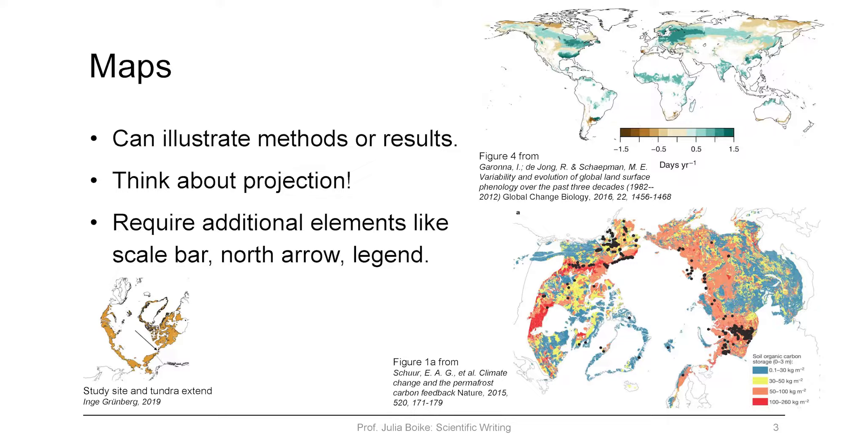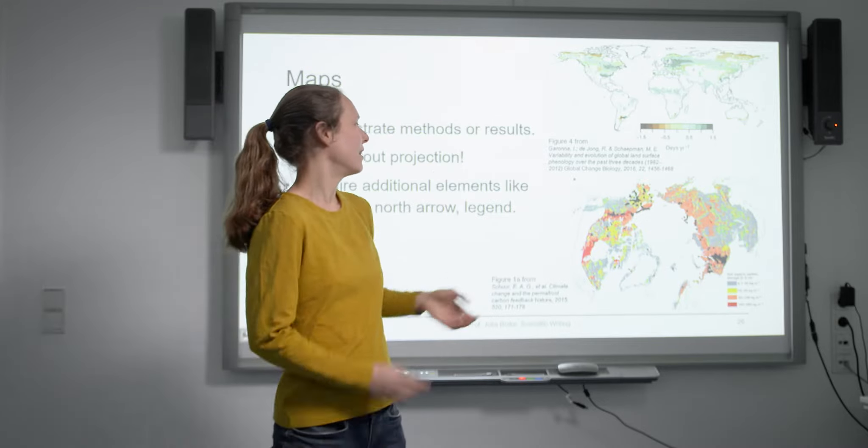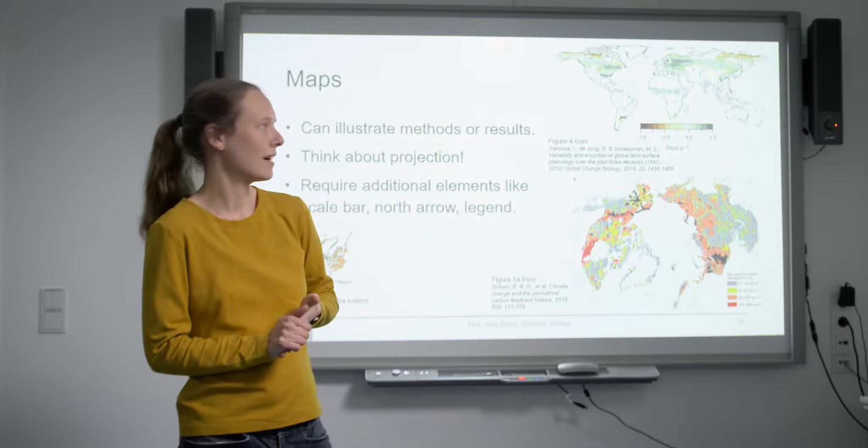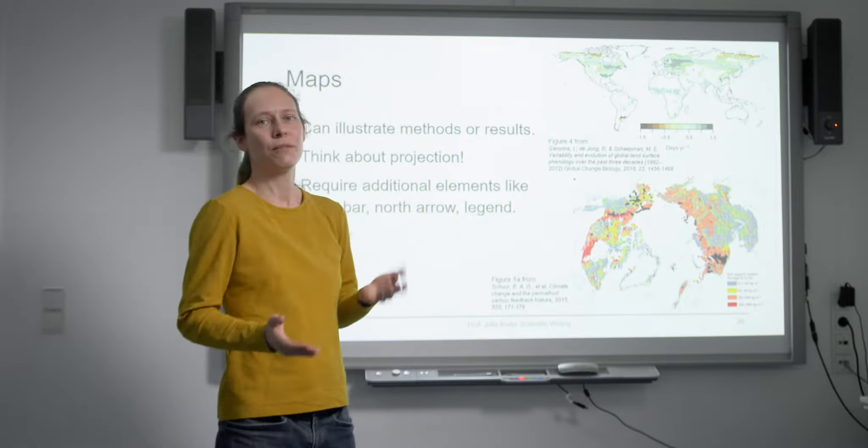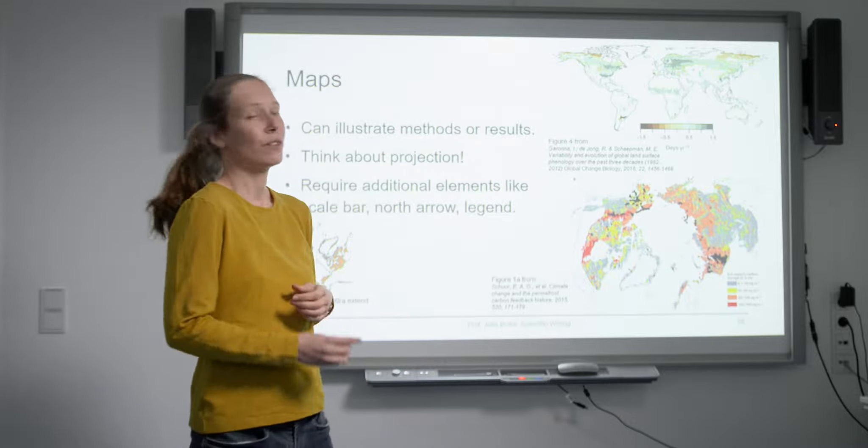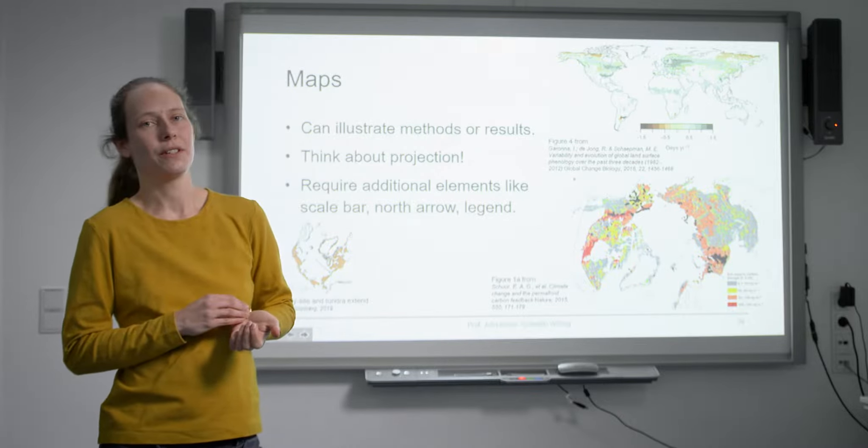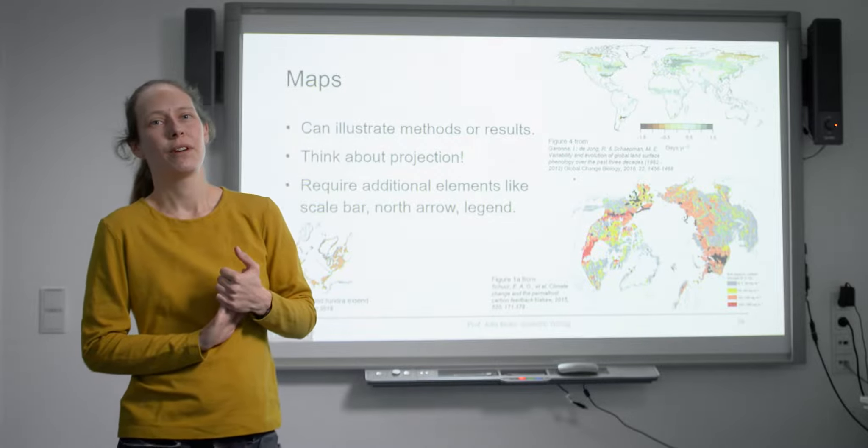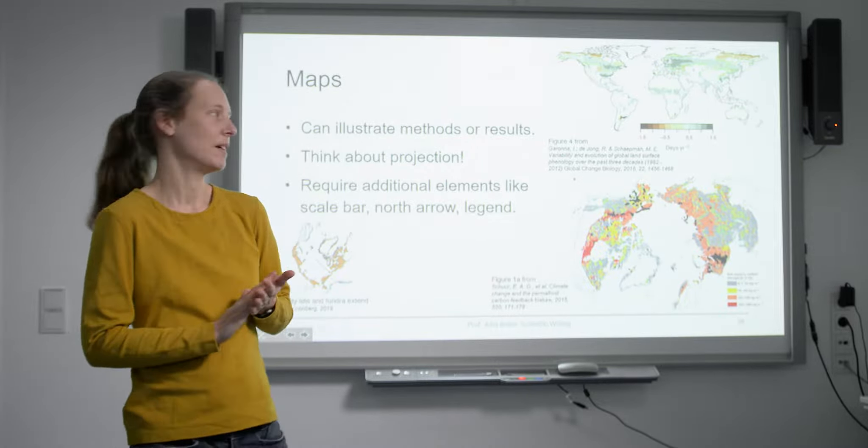This polar projection is much nicer than if you would have the same projection as above, because in the standard projection the polar areas especially are really distorted. So here it's easier to see which areas are actually big or small. Also this color scale is very different. That's of course mostly a matter of taste what you like, but also the first impression that the reader will get is very different, so that's definitely something to consider.